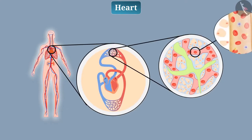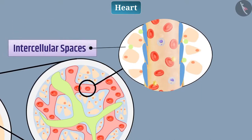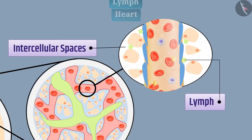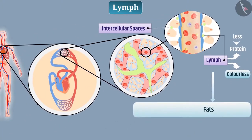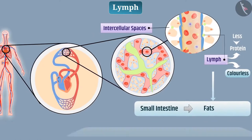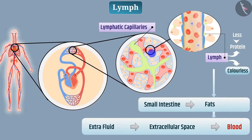Lymph. Sometimes, plasma, proteins and cells present in the blood migrate from the pores of the capillary wall into the intracellular spaces of the tissue. Collectively, this fluid is called lymph. Lymph is similar to plasma, but it has less protein content and is colorless. Lymph carries the fat that is digested and absorbed by the small intestine, and carries the extra fluid from the extracellular space into the blood. The lymph enters the lymphatic capillaries from the intracellular spaces of the tissue; the lymphatic capillaries form lymph vessels that open into the vein.